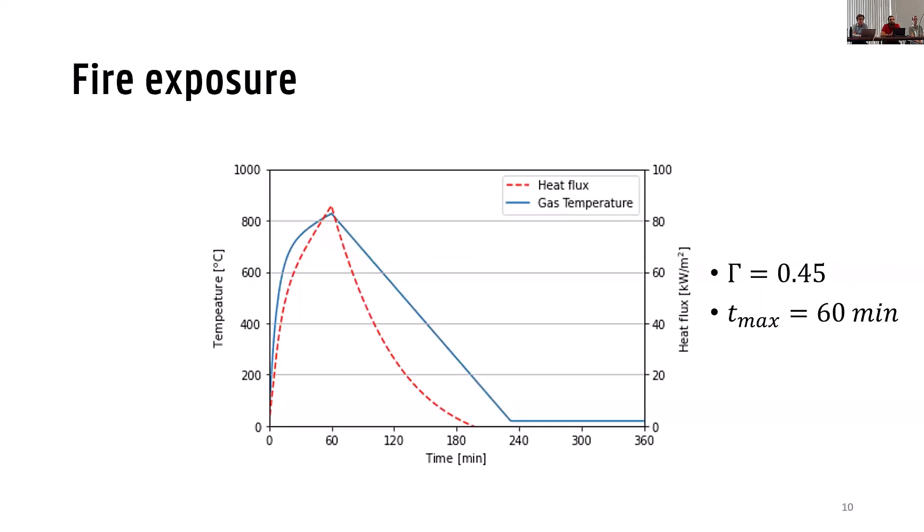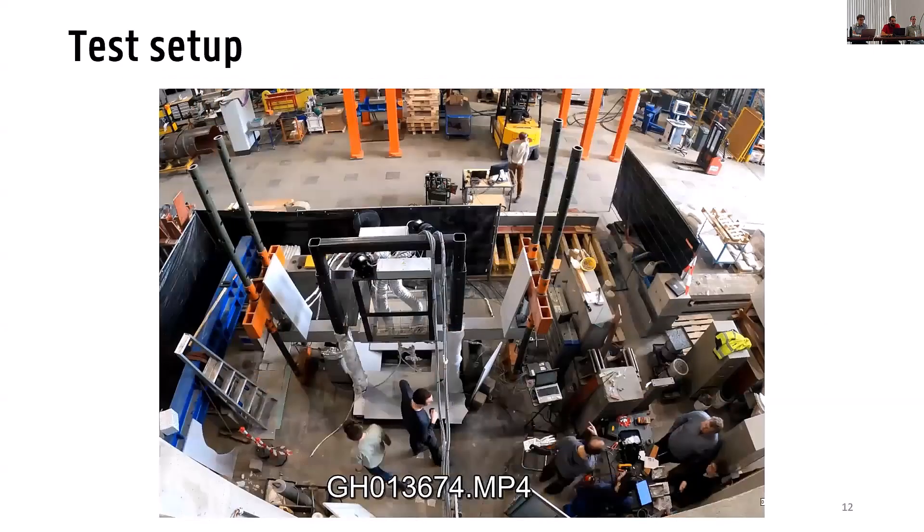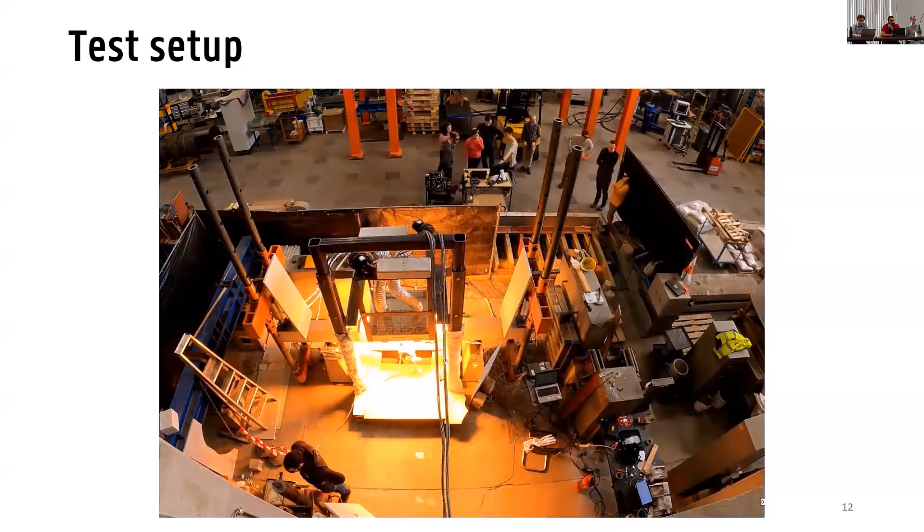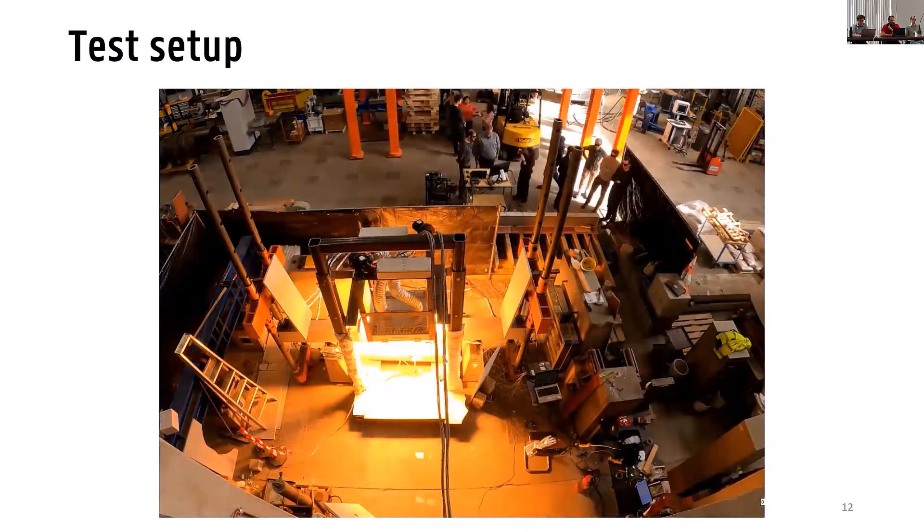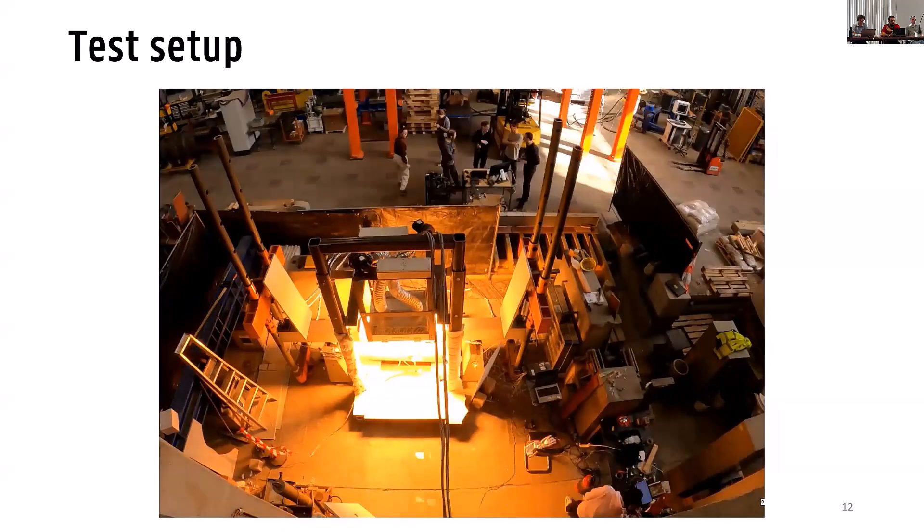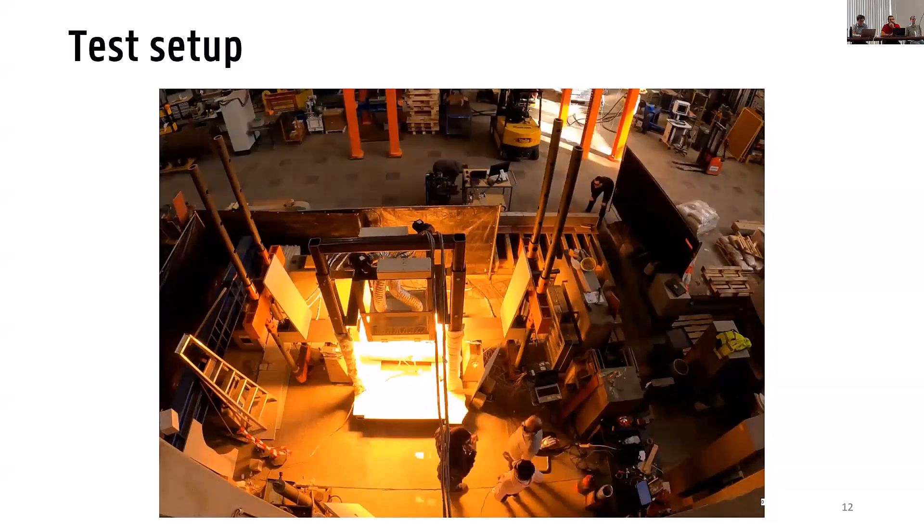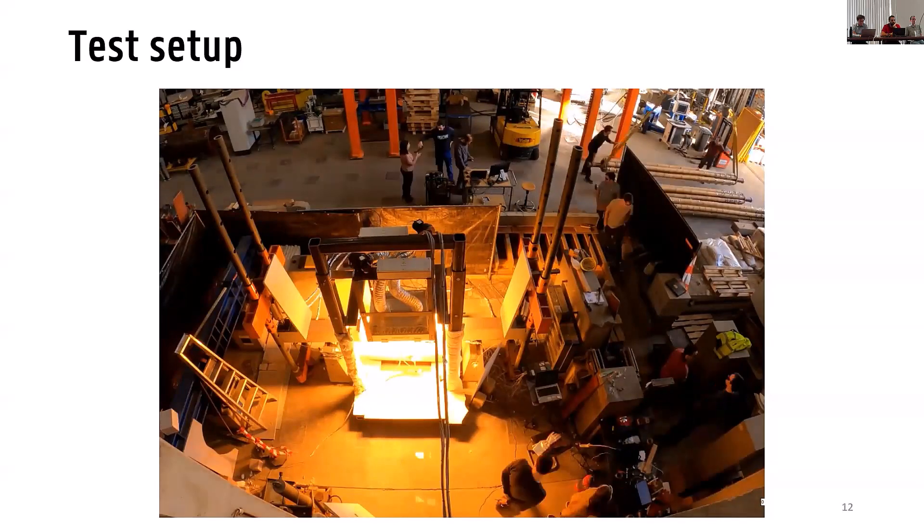And for the fire exposure, we used the parametric fire curve as you can see here with the blue line. So it had the heating duration of one hour and a gamma factor of 0.45. And we translated that gas temperature into a heat flux that we could just apply with the radiant panel that looked like this red curve. So it would simulate the same heat flux that the specimen would experience during a real fire or with this gas temperature. This is how one of the tests looked like. So you can see that the panel itself is quite bright but it is also quite easy to come nearby and using special glasses to check the condition of the beam and maybe even monitor some other visually how the beam behaves during the test.